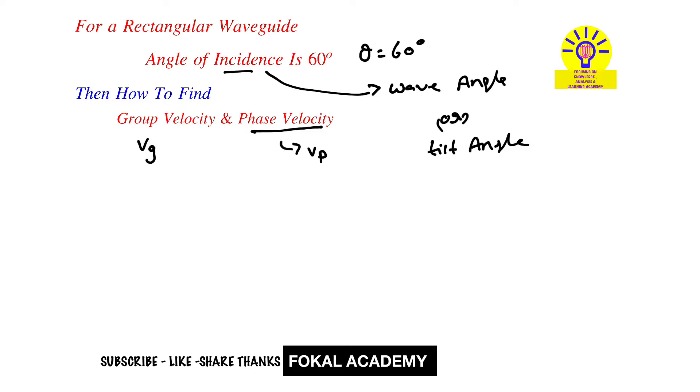Group velocity equals C times sine theta, where theta is the angle of incidence, 60 degrees, and C is the velocity of light, 3 times 10 to the power 8 meters per second.